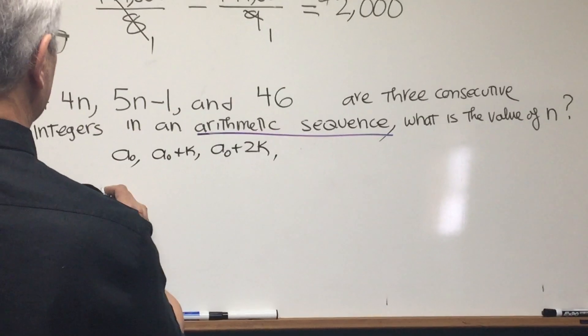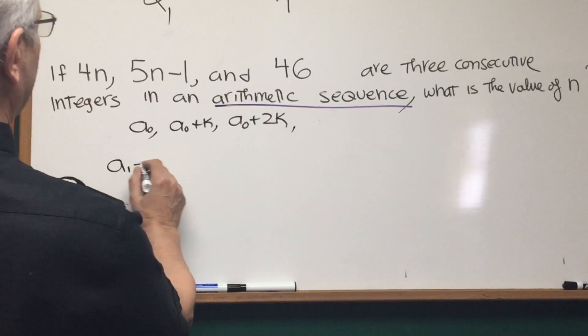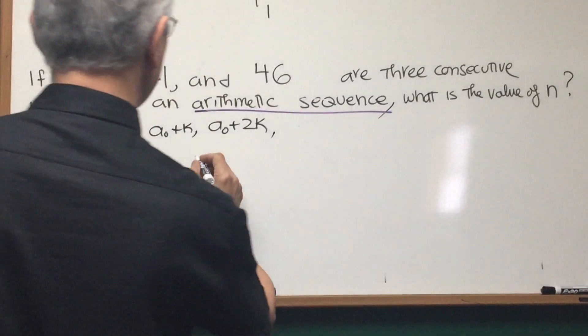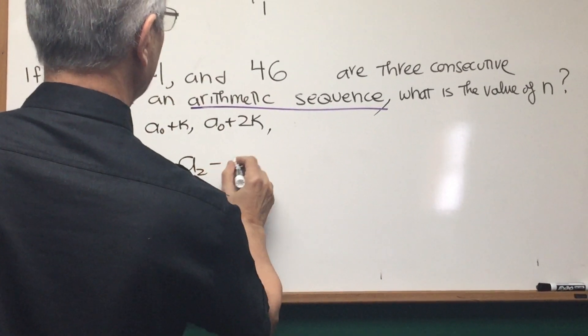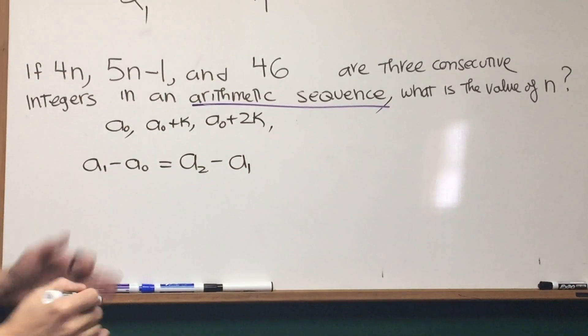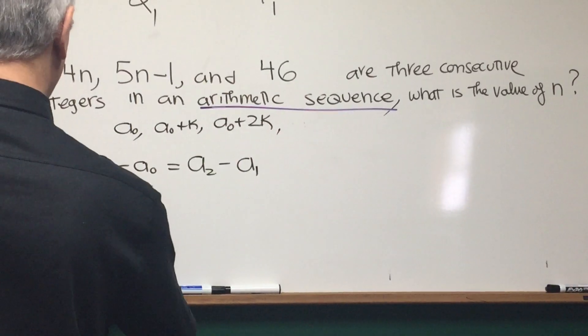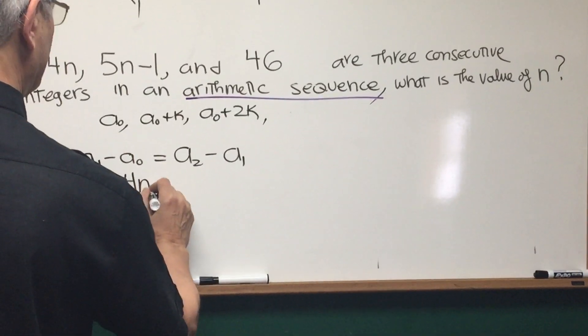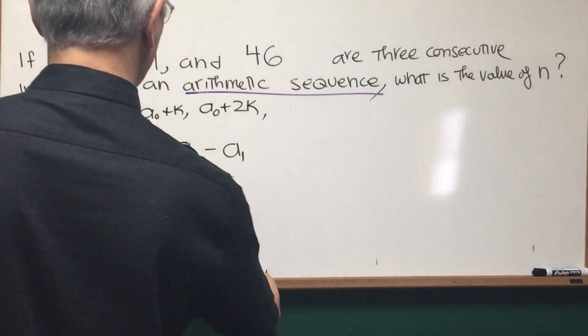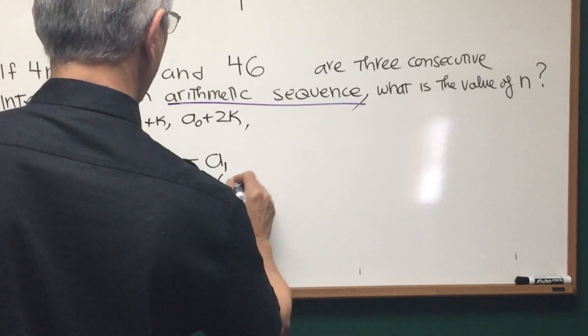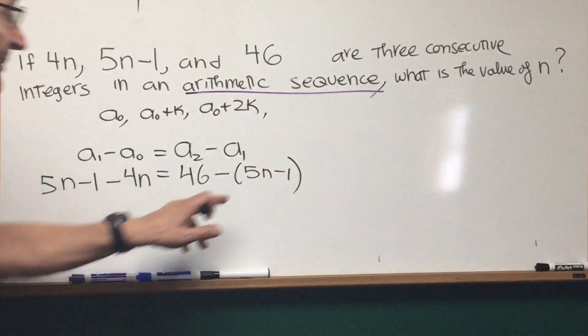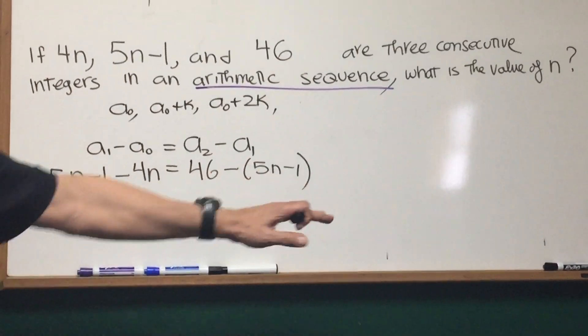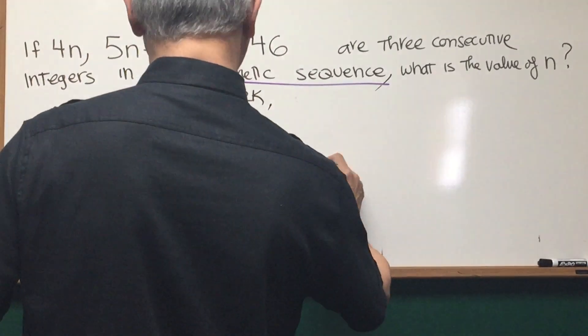So that means the difference a1 minus a0, the first term minus the zeroth term, is going to be equal to the difference between the second term and the first term. So that is to say 5n minus 1 minus 4n is going to be equal to 46 minus 5n minus 1. Make sure you put the parentheses here because the negative sign is going to be distributed through. So this becomes what?